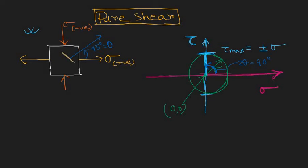On this plane at 45 degrees where shear stress is maximum, you can see from the Mohr's circle that the normal stress is zero — sigma equals zero on this plane. The shear stress is maximum and its value is sigma. So on this particular plane there is zero normal stress and maximum shear stress equal to sigma.